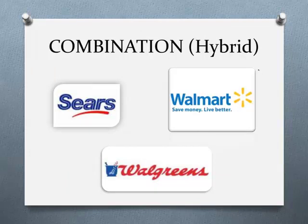We can also have hybrid or combination businesses. Walmart, Walgreens, and Sears all offer not only services but also merchandising. At Walmart, you can get your oil changed, get a haircut, or get your eyes checked — those are services — along with regular products. Walgreens provides pharmacy services but also has merchandise for sale. Sears has auto care, eye care, and hair services alongside their main merchandising business.